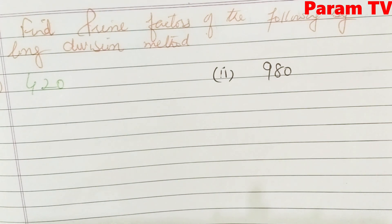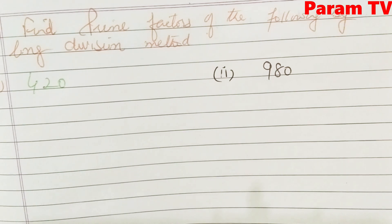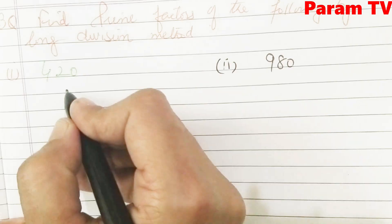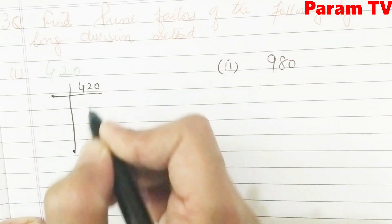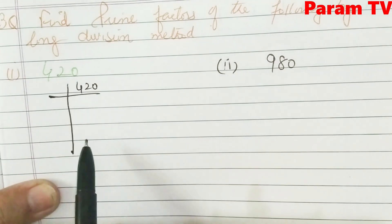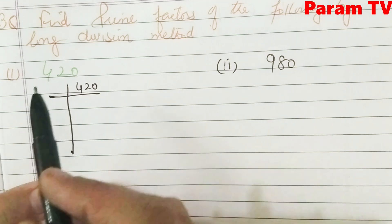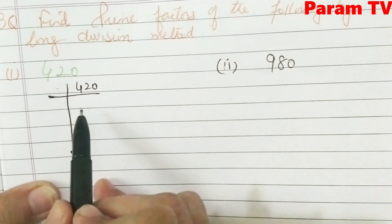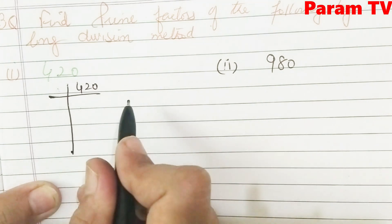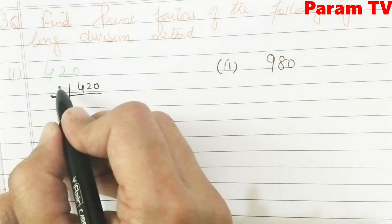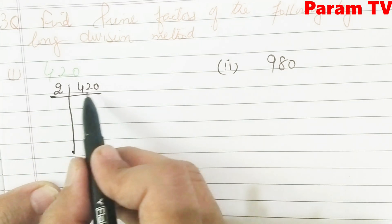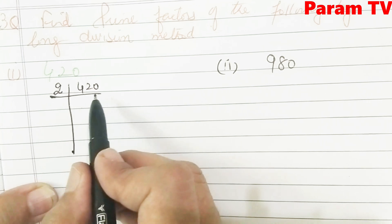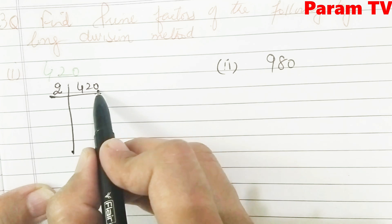Now look, students — it is the long division method, which is different from the factor tree method. The process is the same. We write it like this: 420. To find prime factors, the number you are dividing by must be prime. So the smallest prime number is 2. We start with 2. If you can't divide orally, you can do the division on the side to check. The last digit was 0, so I know it's divisible by 2.